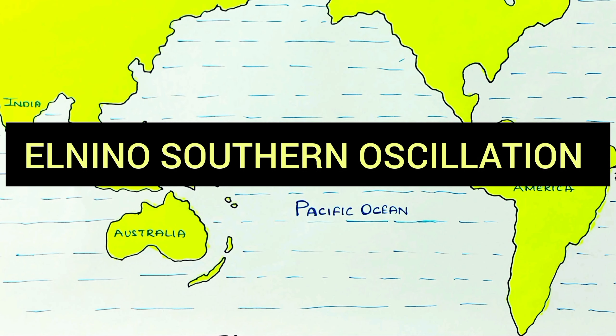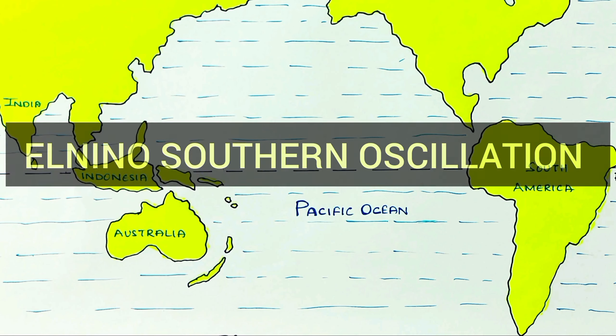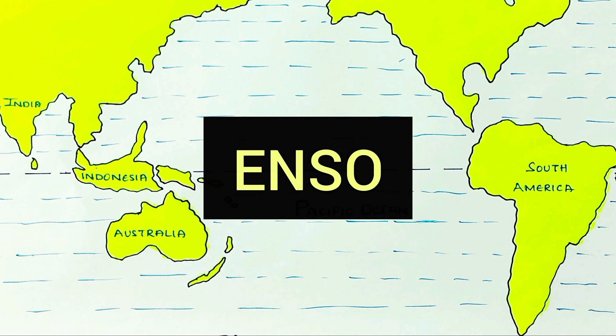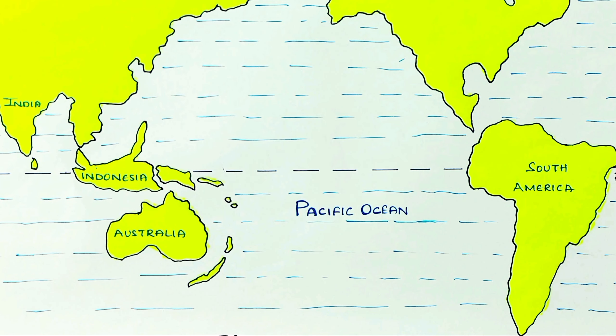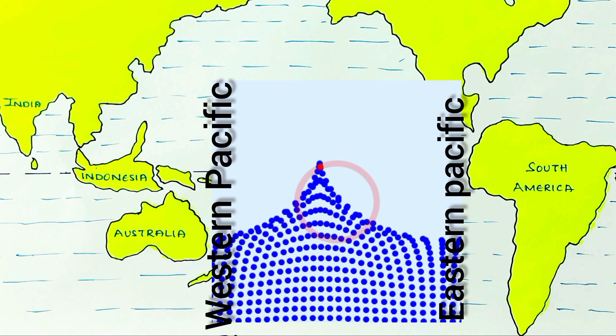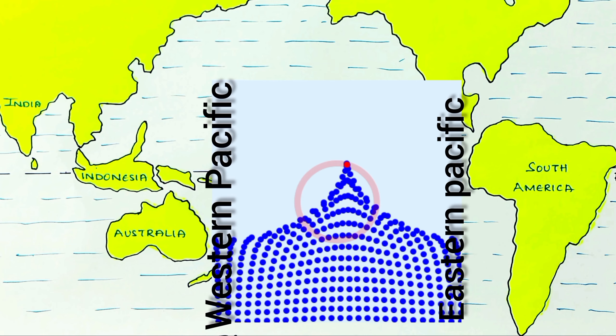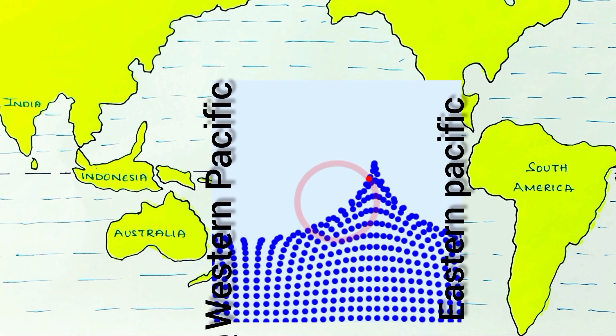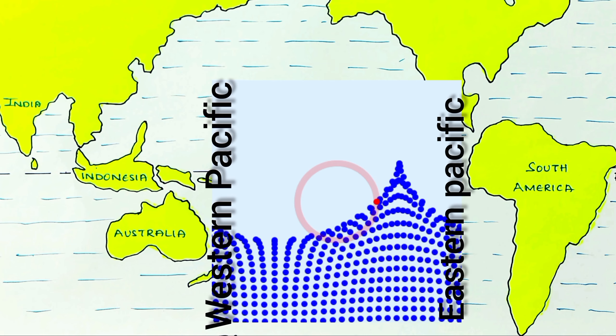The topic is El Niño Southern Oscillation, that is ENSO. To understand it easily, look at this simple pendulum. Just as this simple pendulum oscillates, the ocean currents oscillate between the eastern and western sides of the Pacific Ocean in the southern hemisphere.